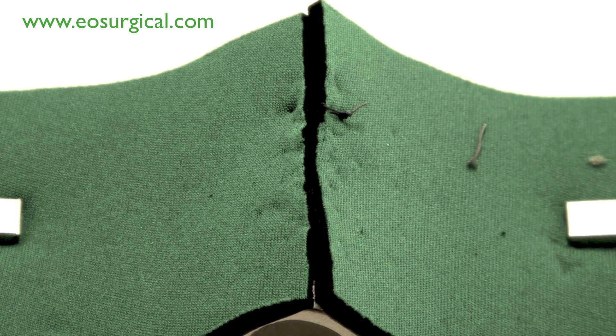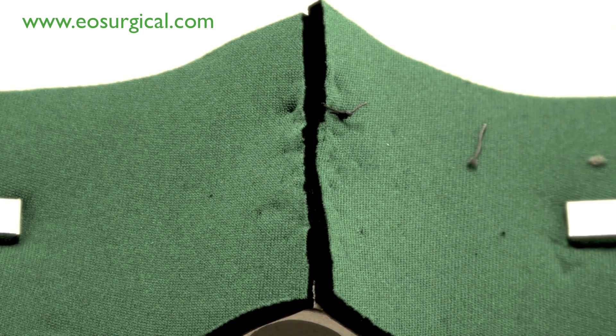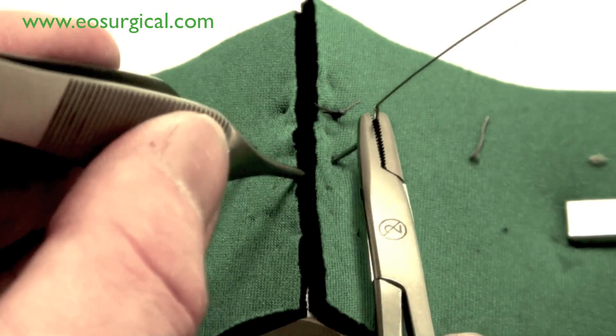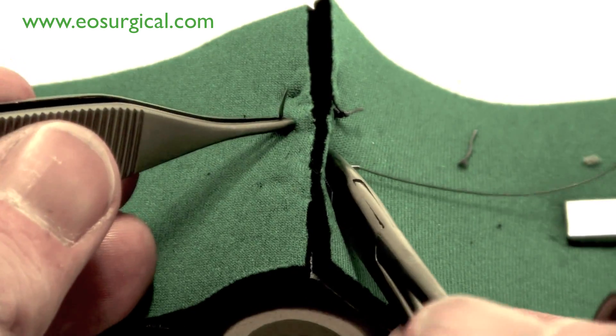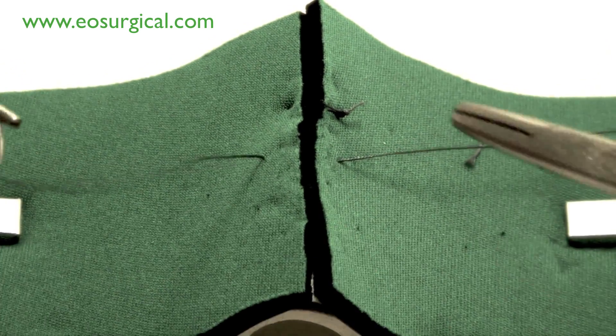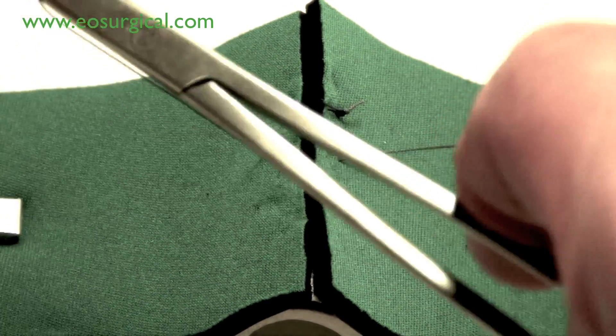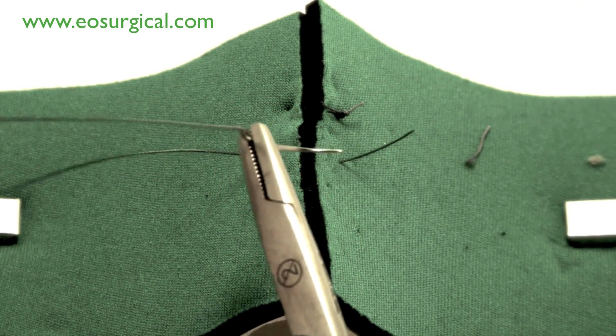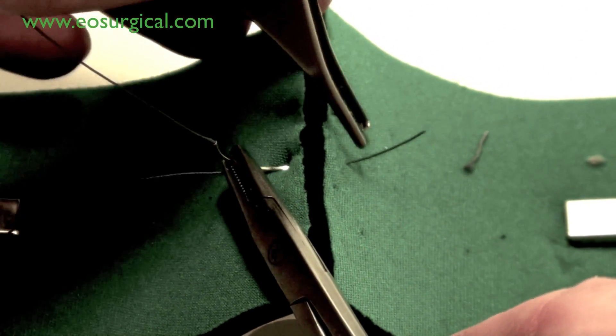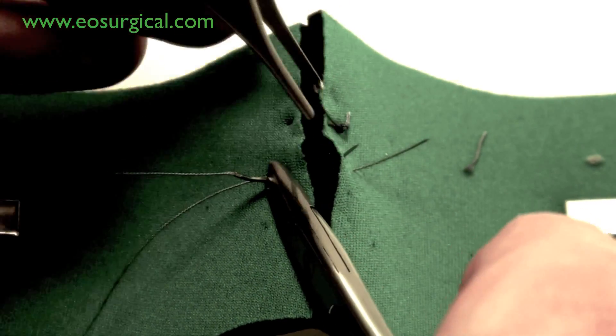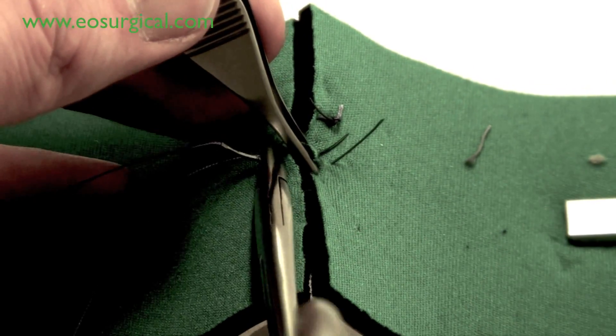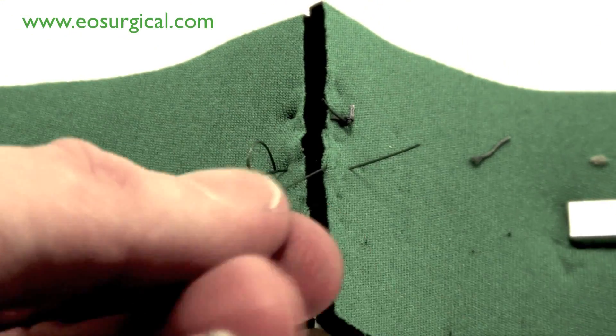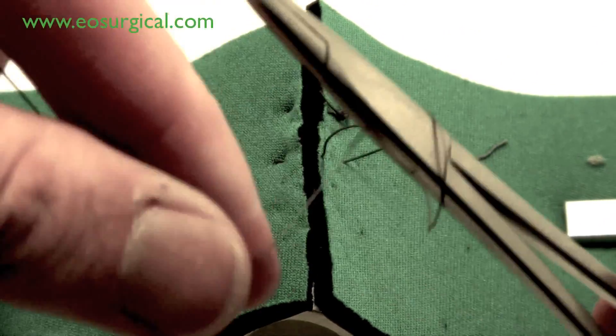Now let's see that same suture again. Starting it wide, passing it through the tissues before reversing the direction and then tying it again using a simple instrument tie.